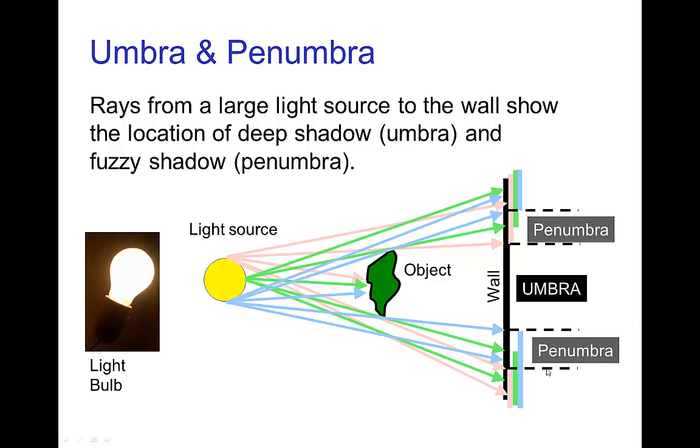But we have these other parts where the light rays from some area of the light source reach the wall, but not all of the light source reaches the wall. So this part we call the penumbra.